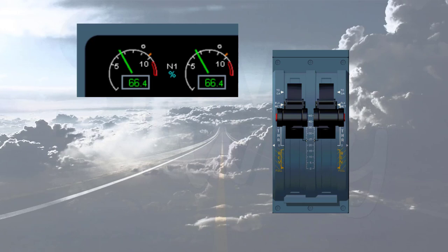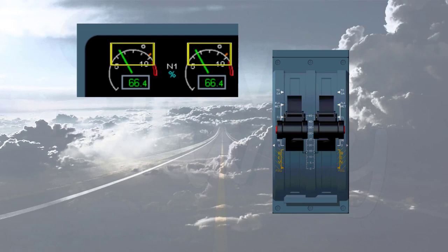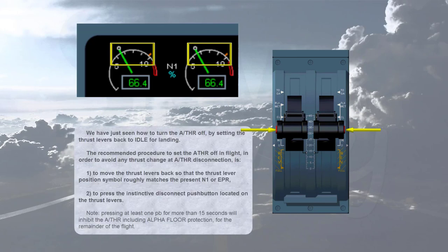We have just seen how to turn the auto thrust off by setting the thrust levers back to idle for landing. The recommended procedure to set the auto thrust off in flight, in order to avoid any thrust change at auto thrust disconnection, is: first, move the thrust levers back so that the thrust lever position symbol roughly matches the present N1 or EPR; second, press the instinctive disconnect push button located on the thrust levers. Note: pressing at least one push button for more than 15 seconds will inhibit the auto thrust, including alpha floor protection, for the remainder of the flight.